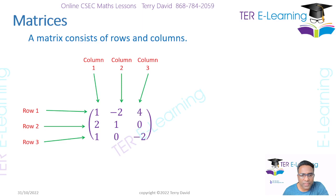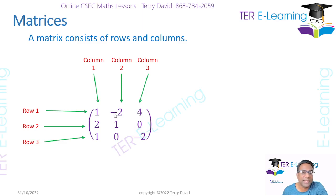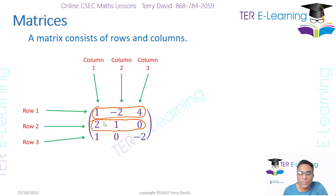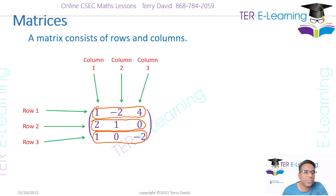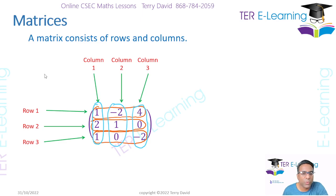When it comes to a matrix, we have both rows and columns, and that is something you need to understand very carefully, because we use rows and columns when we are multiplying matrices and when we have to determine the order of a matrix. Rows are horizontal — so here we have row 1, row 2, and row 3. Columns are vertical — so this here represents column 1, this here represents column 2, and this here represents column 3. So every matrix will have rows and columns.